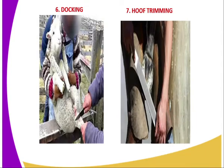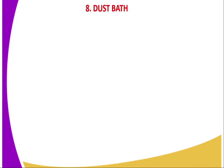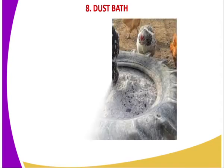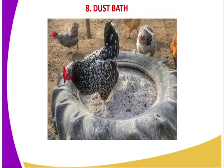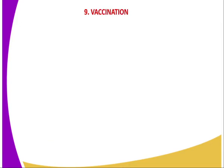We also have hoof trimming, whereby a hoof cutter is normally used to cut the overgrown hooves to control hoof rot disease. Then we have dust bath — an example being peat ash, which is normally provided to poultry so that they can bathe with it. Peat ash is very important because it kills the parasites which normally affect poultry.